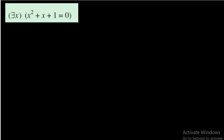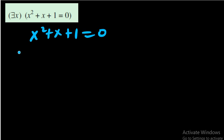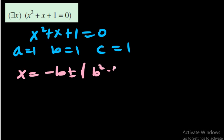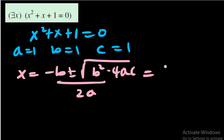The second question is quadratic: there exists x such that x² + x + 1 = 0. We need to solve this quadratic equation. We can use three methods — completing the square, factorization, or the formula. Using the formula with a = 1, b = 1, c = 1: x = (−b ± √(b²−4ac)) / 2a.